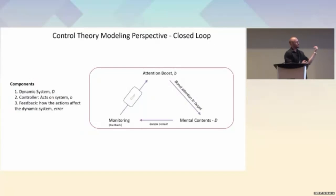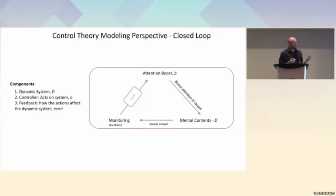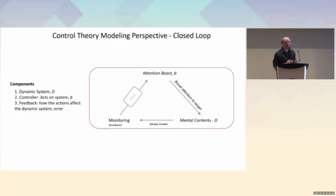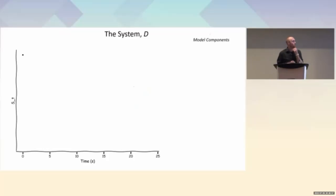To better define these relationships, I'll use a control theory modeling perspective — specifically a closed-loop relationship with three main components: a dynamic system D representing mental/internal contents; a controller that acts on those contents via an intentional signal or boost; and feedback that determines how actions affected the state, with that error signal used to determine how best to act on subsequent time steps.